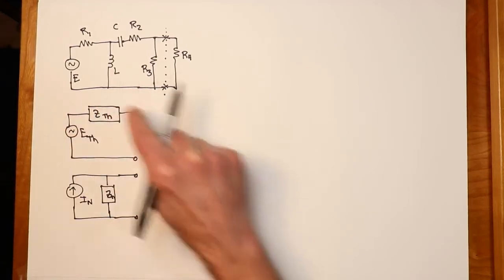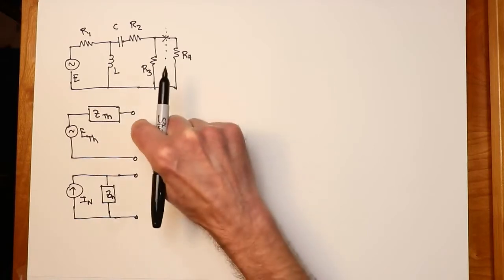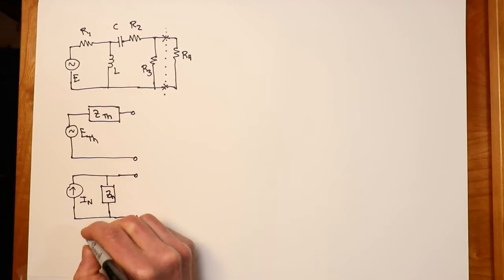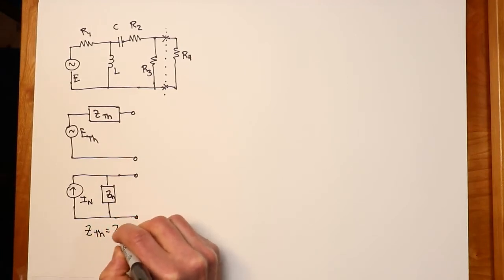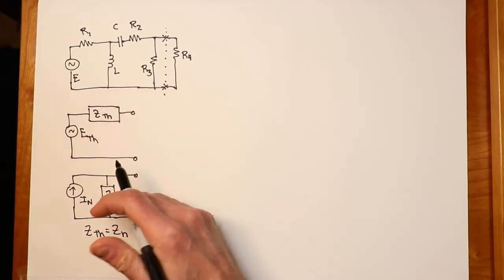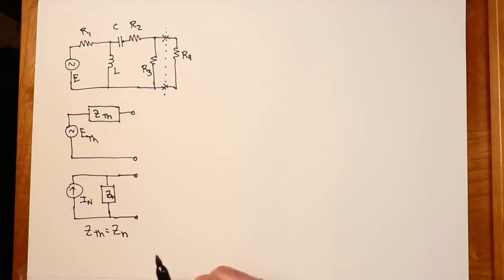Now, just thinking about the source conversions we recently did, it's obvious you can go from here to here. As a matter of fact, Z-Thevenin and Z-Norton must be the same size. Now we have the two, it's just sometimes convenient to have a voltage source, sometimes it's convenient to have a current source. So we can do it either way.